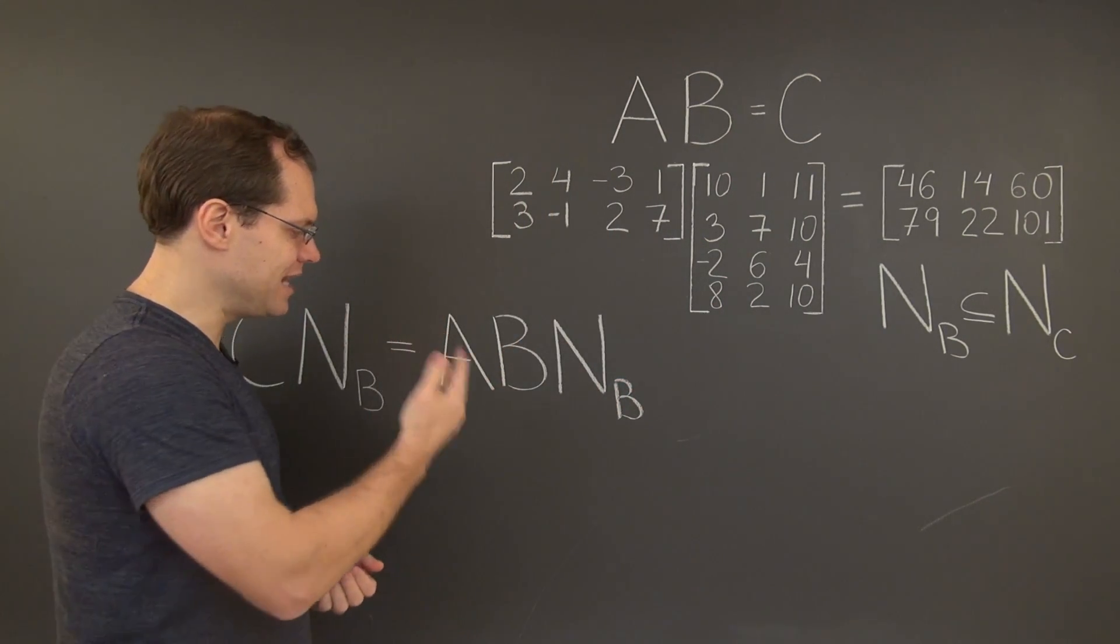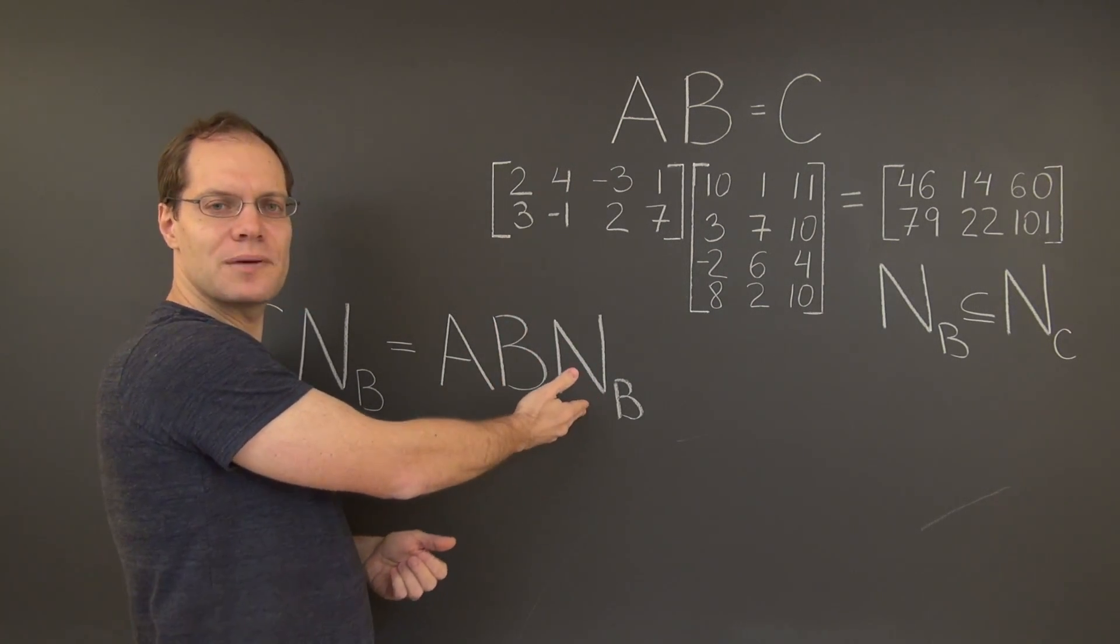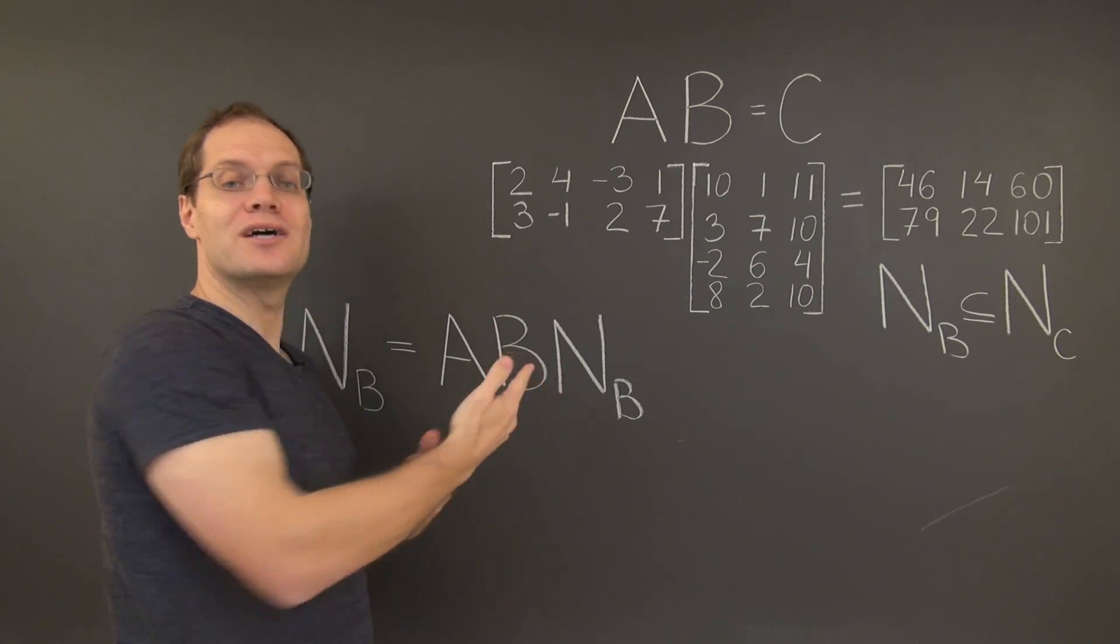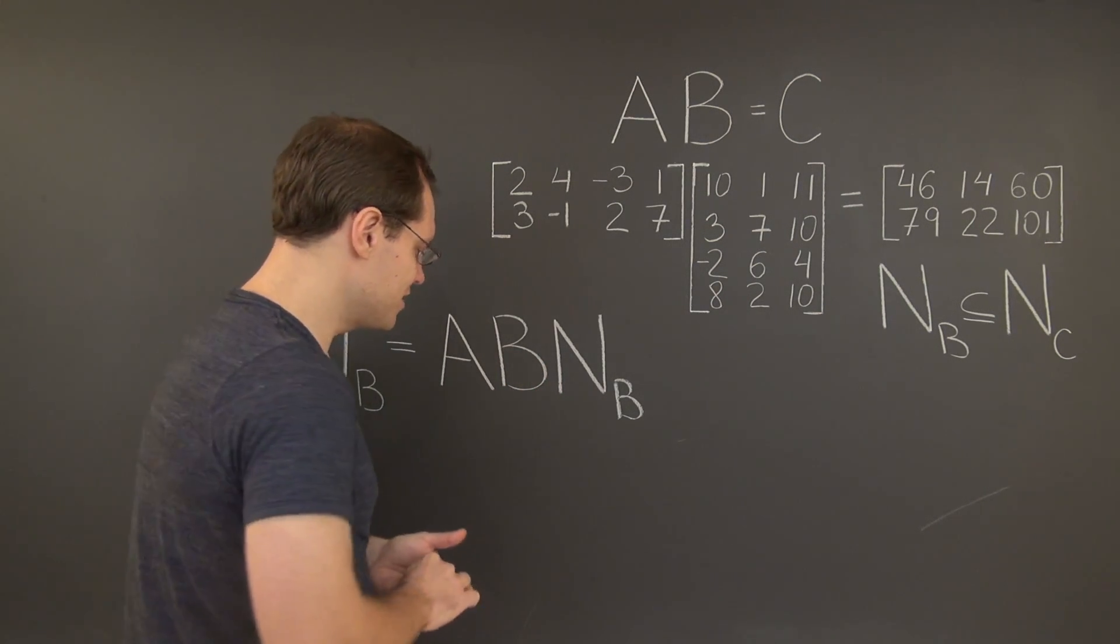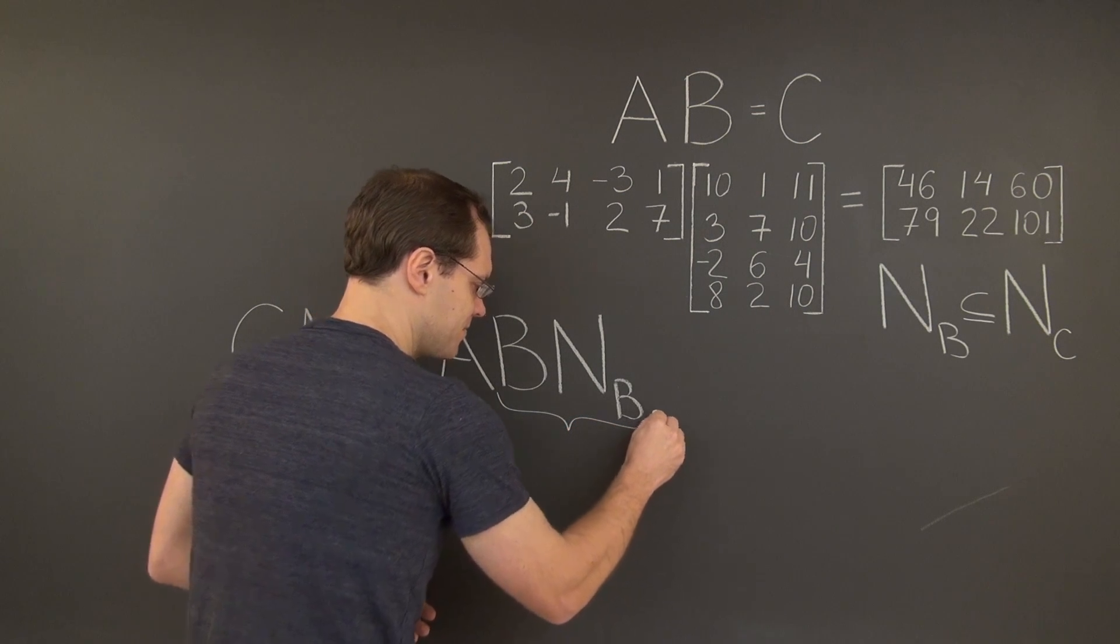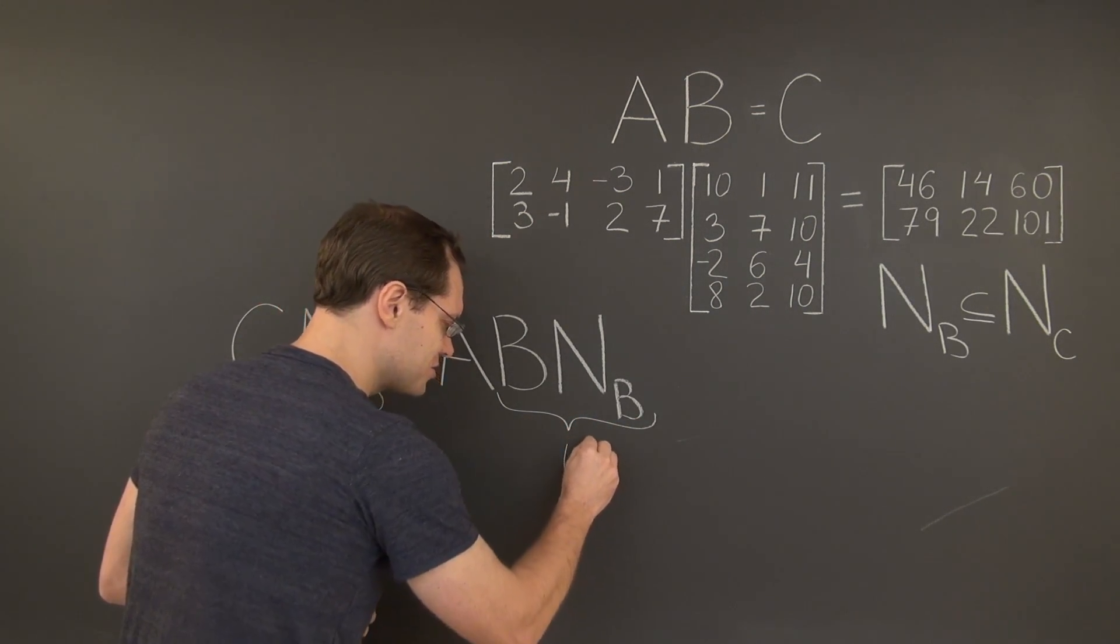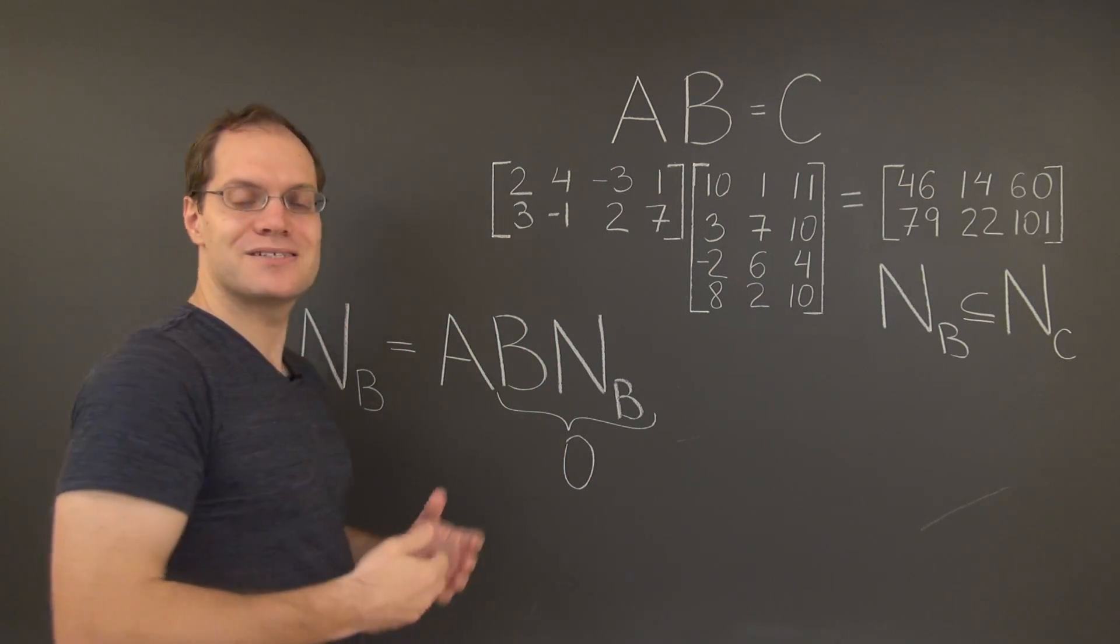Alright, so now we're finding that B multiplies the matrix that represents its null space. And once again, as we've discussed previously, this product right here is the 0 matrix by definition of the matrix representing the null space of the matrix B.